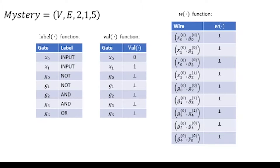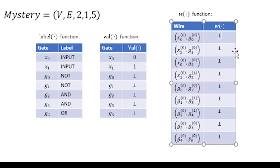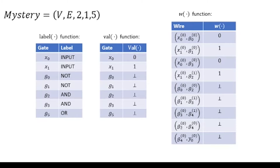Our input bit string is 0, 1, so x0 is preloaded with 0 and x1 is preloaded with 1. Then we find every single edge where the source of that edge has its value already defined. Since x0 and x1 are the only ones defined, every edge that starts with x0 or x1 — we know what value that wire is carrying. The edge x0 to g0 carries 0, x1 carries 1, and x0 carries 0.